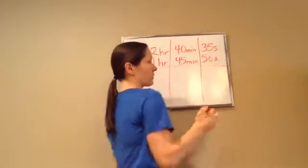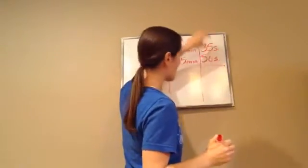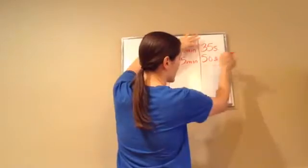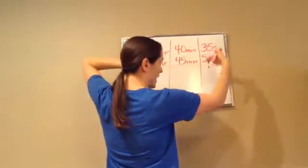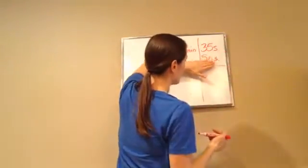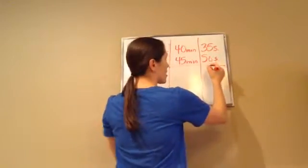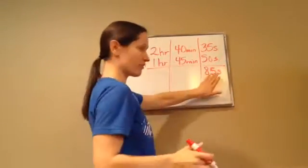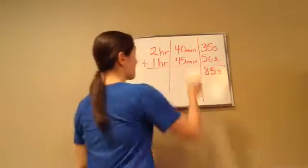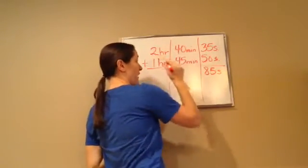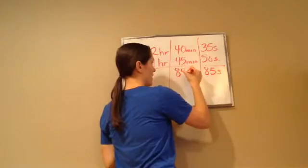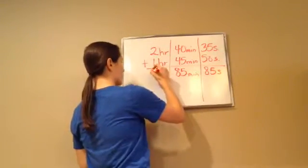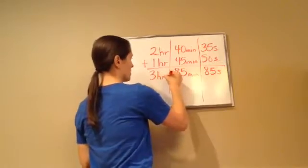50. Now, the important thing is you're adding 50 plus 35. And that's very important when you start subtracting, because you want to subtract time or add time. So this is 50 seconds plus 35 seconds, which equals 85 seconds. We'll figure out what to do with that in just a minute. 40 minutes plus 45 minutes equals 85 minutes. And 2 hours plus 1 hour is 3 hours.